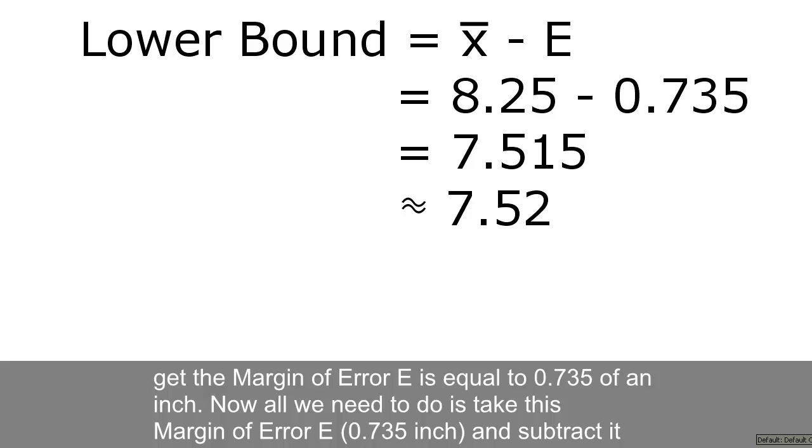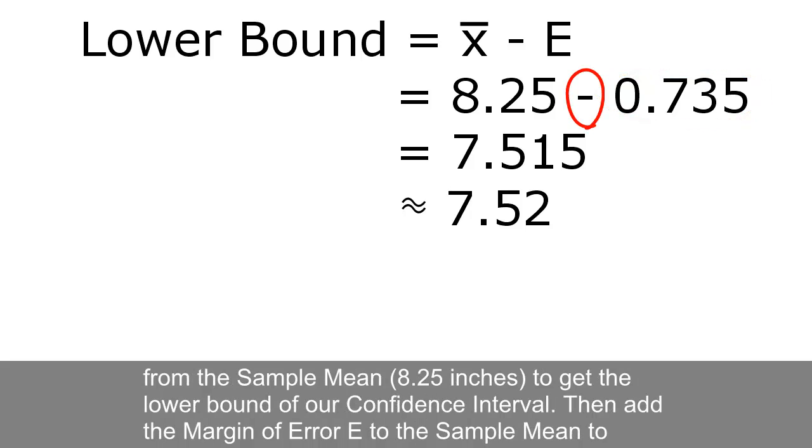Now all we need to do is take this margin of error E, 0.735, and subtract it from the sample mean, 8.25, to get the lower bound of our confidence interval.